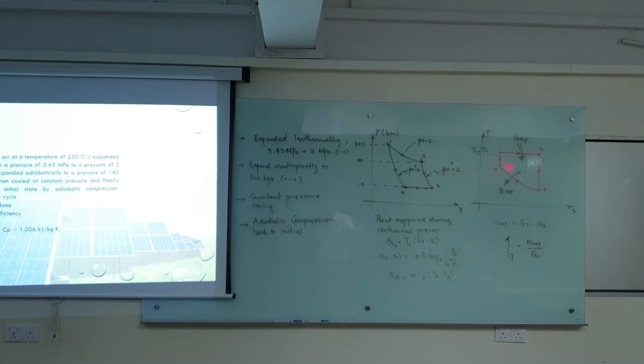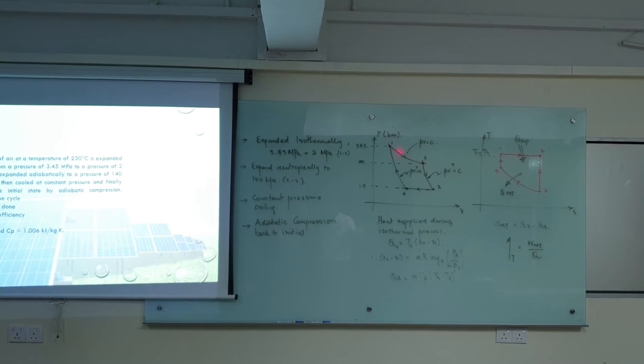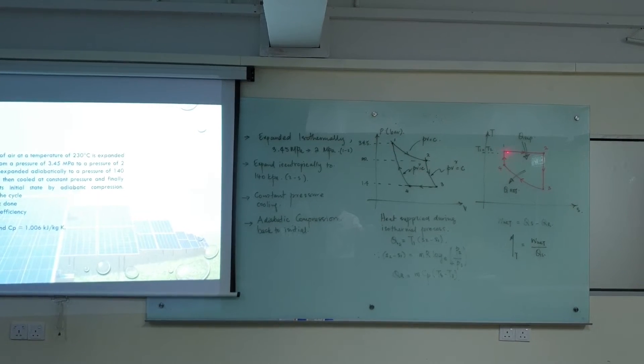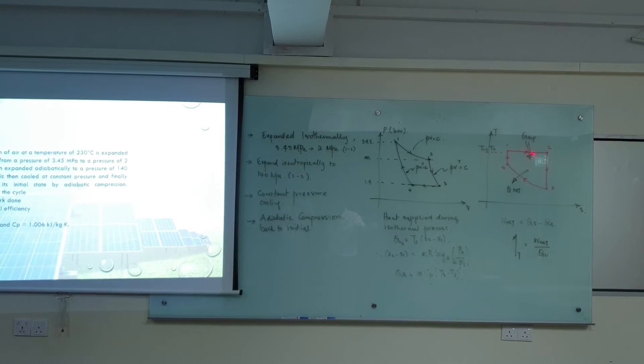And so from the PV diagram, we have our TS diagram. So 1 to 2 is an isothermal process. So on the TS diagram, isothermal is supposed to be a horizontal line, so 1 to 2.